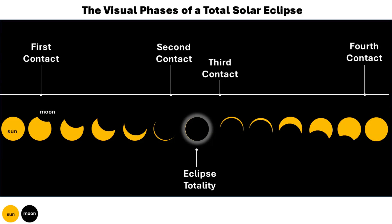Once again, a diamond ring effect may be observed. Fourth contact is the final phase, where the trailing edge of the moon ceases to overlap with the solar disk, signaling the end of the eclipse.